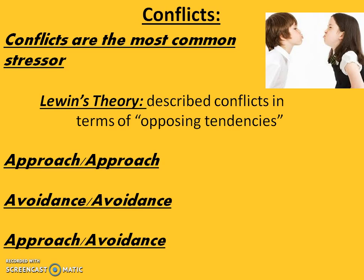This is actually the most common form of conflict and is often very difficult to resolve. According to Lewin, the closer we come to a goal with good and bad features, the stronger our desires grow both to approach and to avoid, but the tendency to avoid increases more rapidly than the tendency to approach.